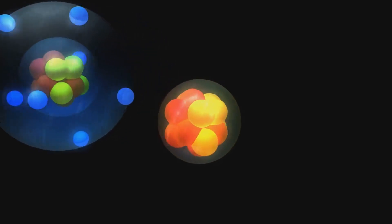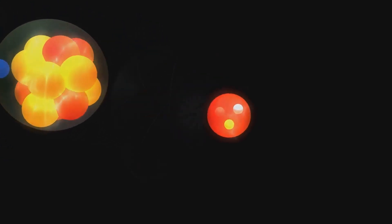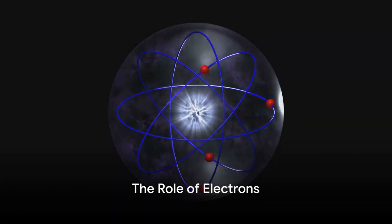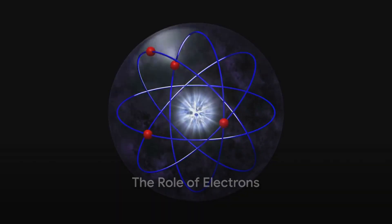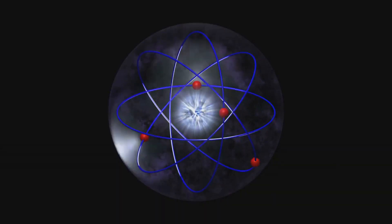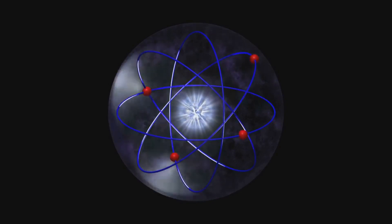Neutrons on the other hand carry no charge but contribute to the mass of the atom. Electrons, the third component, are negatively charged particles that inhabit regions around the nucleus, known as energy levels or shells.